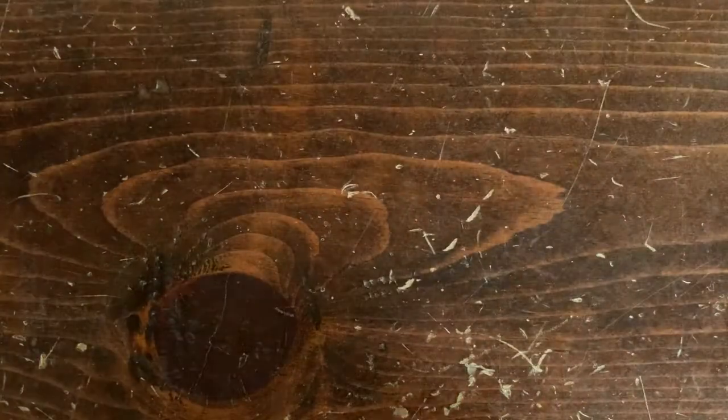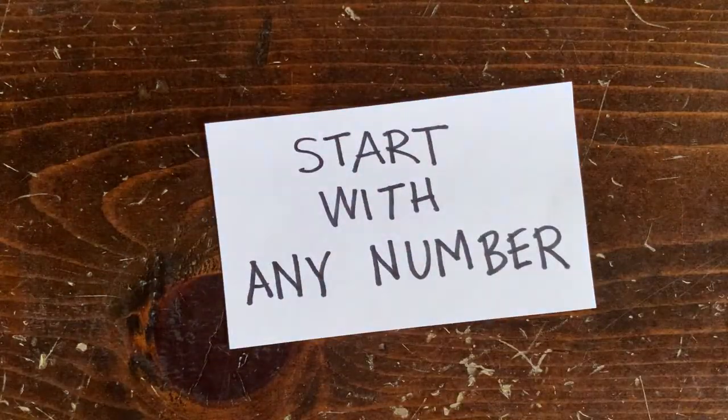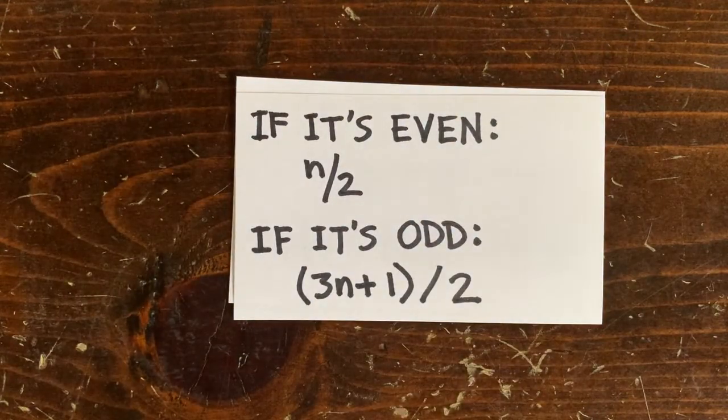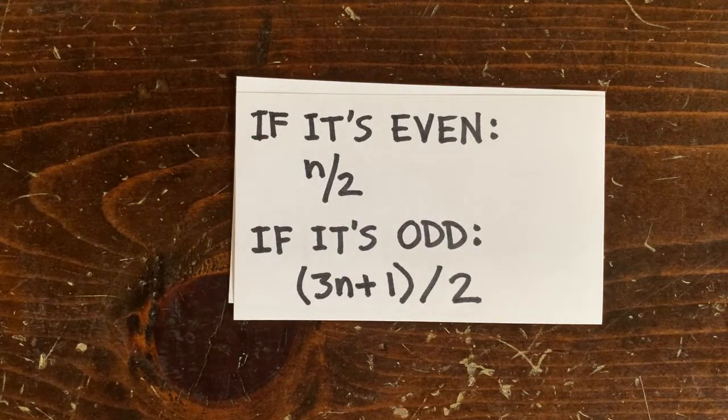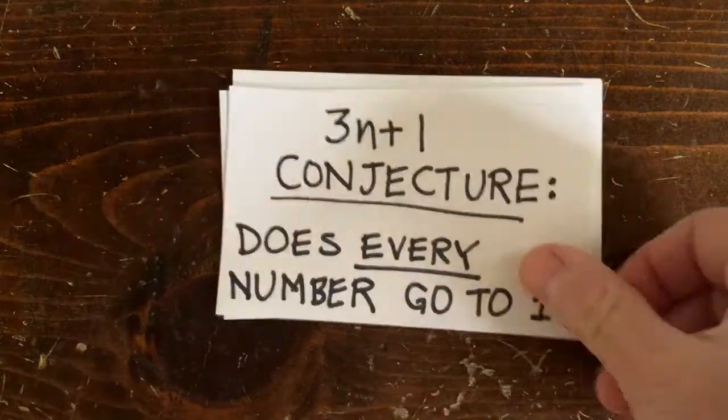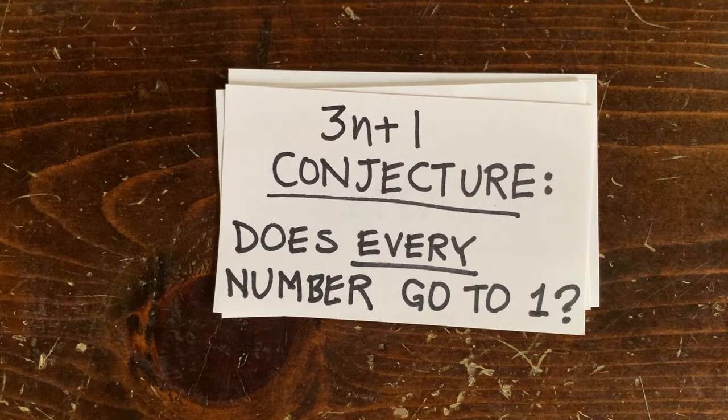To recap, the 3n plus 1 conjecture says start with any number. If it's even, cut it in half. If it's odd, multiply by 3 and add 1 and cut that in half. Then repeat. The famous 3n plus 1 conjecture asks, does every number go to 1?